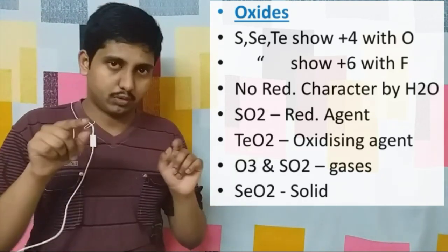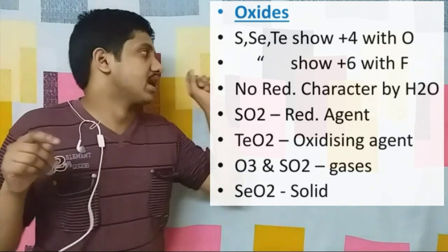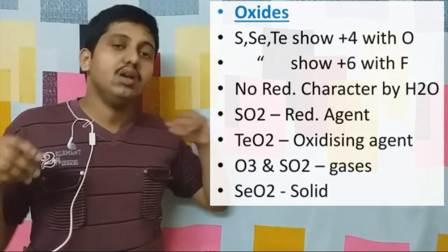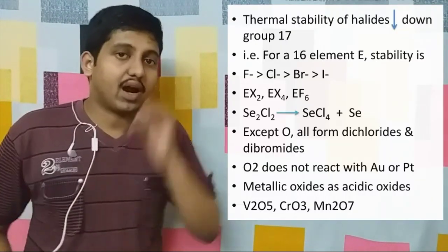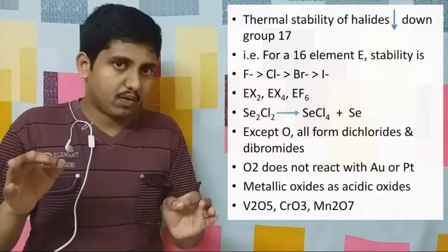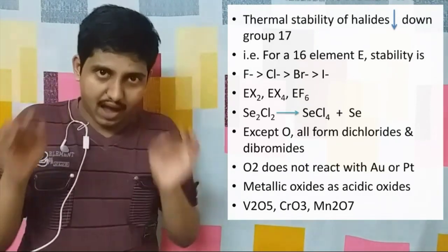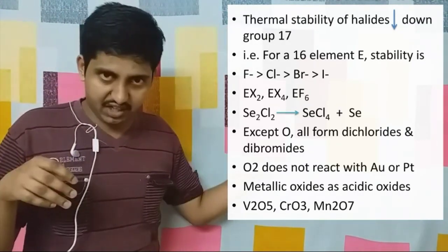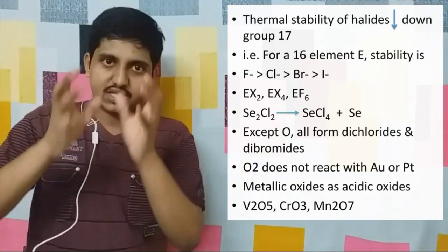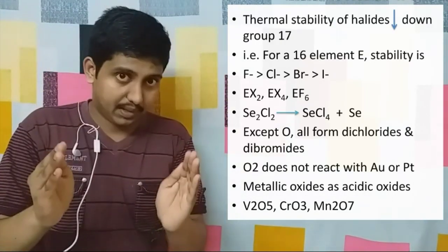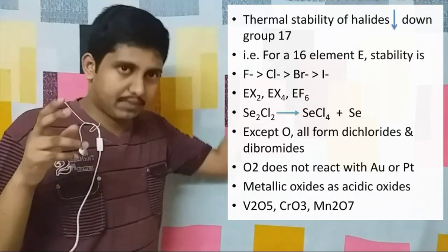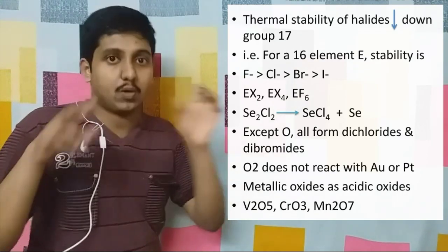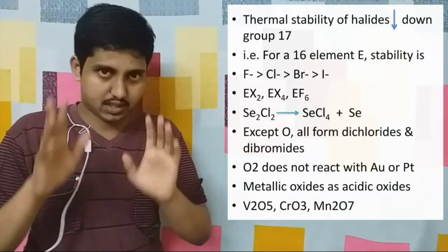SeO2 — selenium dioxide — is actually solid in nature, while oxygen, SO2, etc. are all gases. Now, regarding the halides, you must remember one thing: the stability of halides decreases down the group in group 17. If a group 16 element E combines with a halogen, it will form EX2, EX4, and EX6 — and of EX6, only EF6 exists.